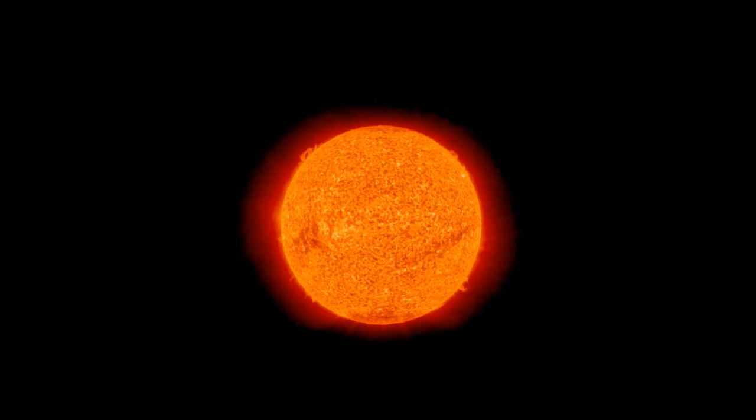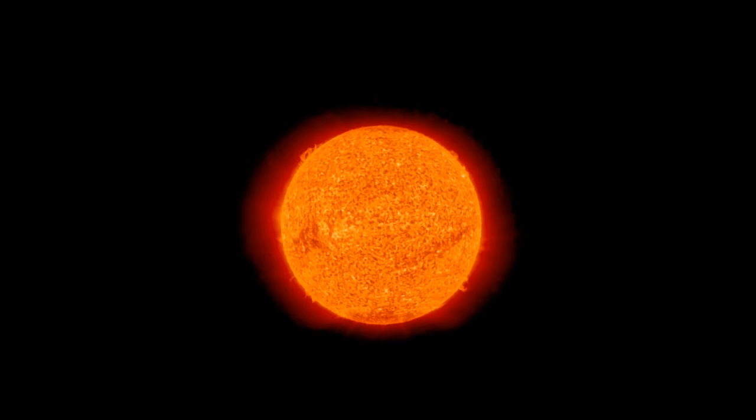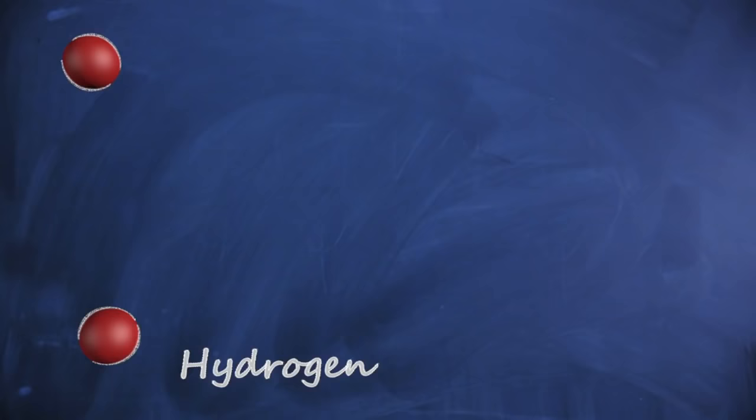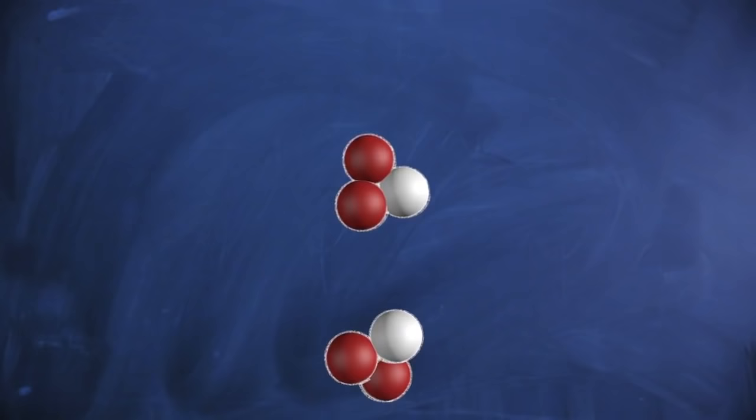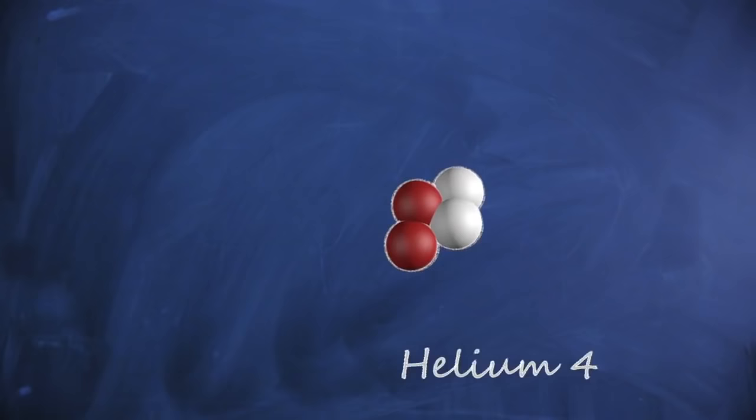Physicists believe that the core of the sun acts like a nuclear fusion reactor. The main process is the proton-proton chain reaction, where hydrogen nuclei are fused to form helium, producing vast amounts of energy which balances the gravitational collapse of the star.